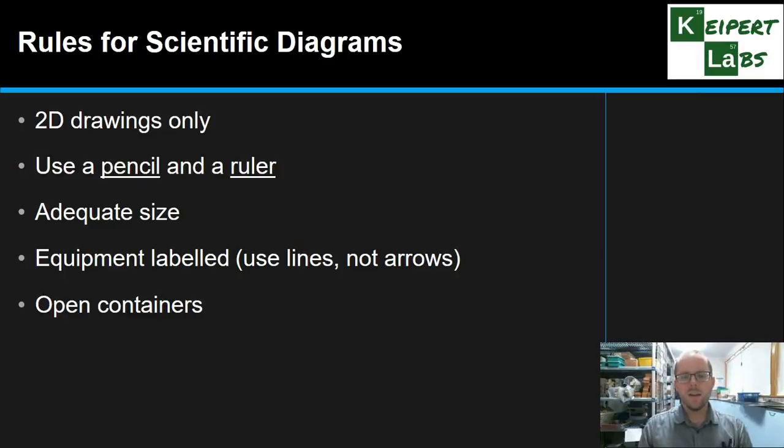And then last kind of main thing is that when we're drawing a container like a beaker, like a test tube or a conical flask that is open at the top, our diagram shows it to be open as well rather than kind of trying to show a lip at the top or something like that which makes it look like it's closed. Now some containers we would use are closed and so we need to make sure that the diagram reflects that as well. But most of the things you'd be dealing with are open containers we would say.